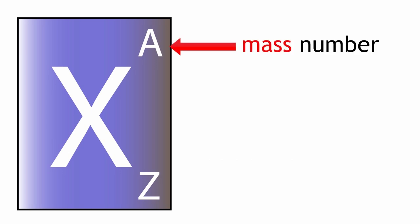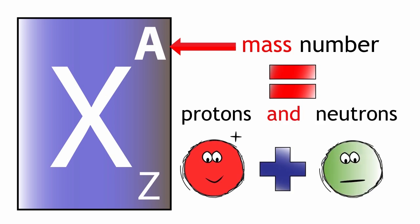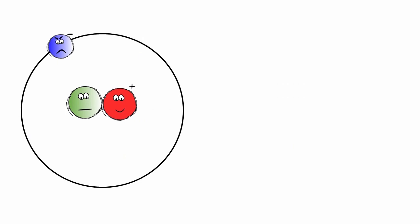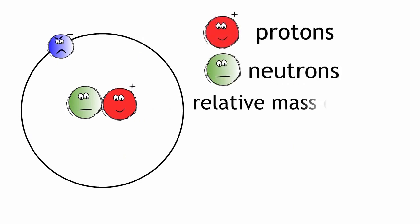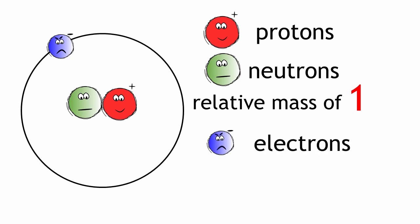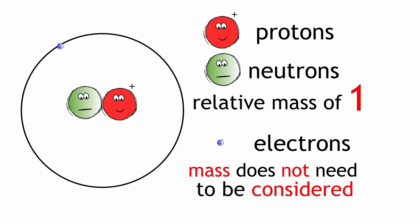The next number we look at is the mass number. The mass number has a symbol A. The mass number tells you how many protons and neutrons are in one atom of an element. We need to remember that protons and neutrons each have a relative mass of 1, and that electrons are so small that their mass does not need to be considered in the mass number of an atom.